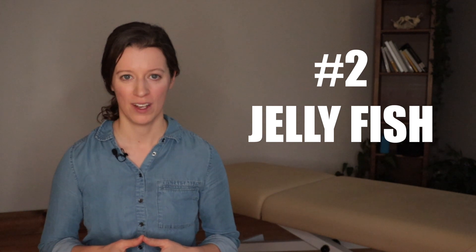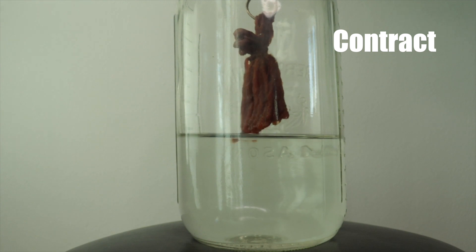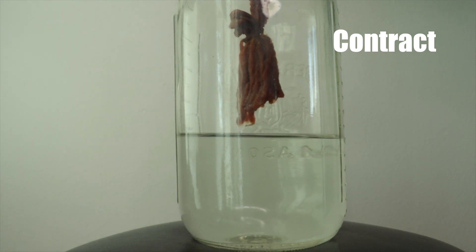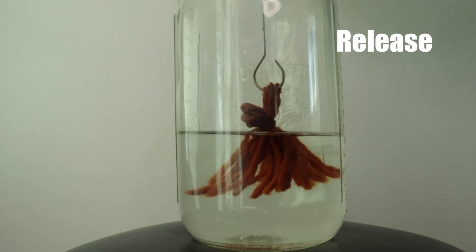The second cue for you to try is to picture your vagina as a jellyfish. So when you contract, you want to imagine your jellyfish coming up with the tentacles squeezing together and when you release the jellyfish goes back down, opening the tentacles.